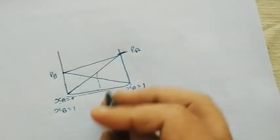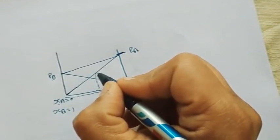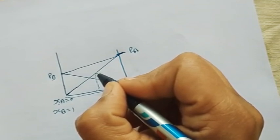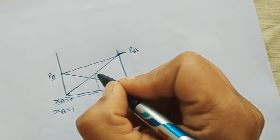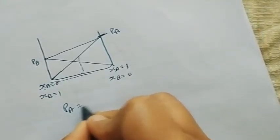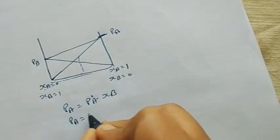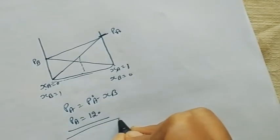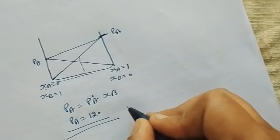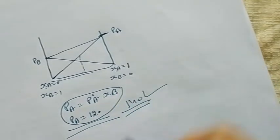But if the solution is showing positive deviation, it means the pressure obtained by experiment is more than what is calculated by Raoult's law equation. For example, Raoult's law gives a calculated value of 120, but in reality, the experiment gives 140. So the experimental pressure is more than the calculated value.